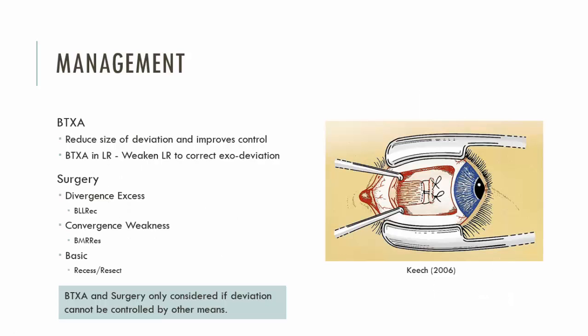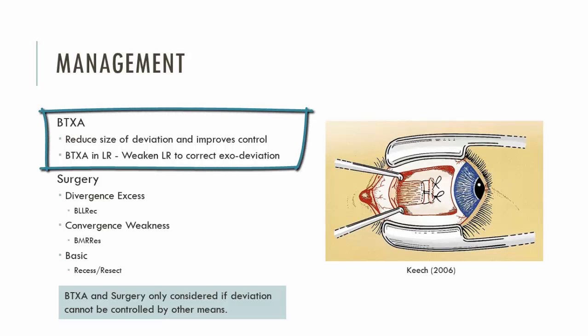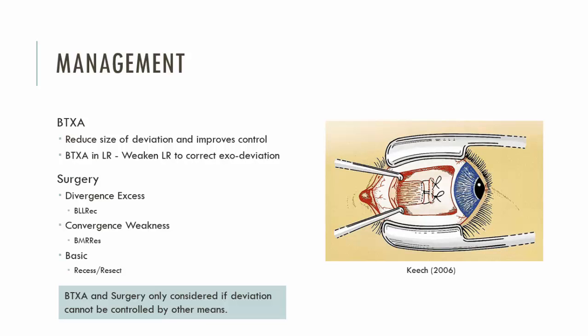Less conservative options are the utilization of Botox or surgical intervention. These should only be considered if the deviation cannot be controlled by other means such as glasses or orthoptic treatment. With Botox, you would be weakening the lateral rectus by injecting Botox into it, in order for the patient to take control of the exodeviation. What you're hoping for is that with the Botox in, the patient gains control of the exophoria and then, as the Botox wears off, the patient maintains that control. During the active period of the Botox, you could also prescribe orthoptic treatments such as stereograms to further assist the patient.